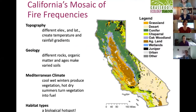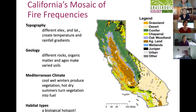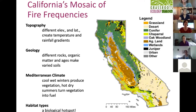As an overview, when you think about California and fire, remember that California is a mosaic of very diverse elements — topography, geology, climate, and habitat types. This image shows that mosaic quality, and California's fire regimes are just as diverse, affected by all of these things.